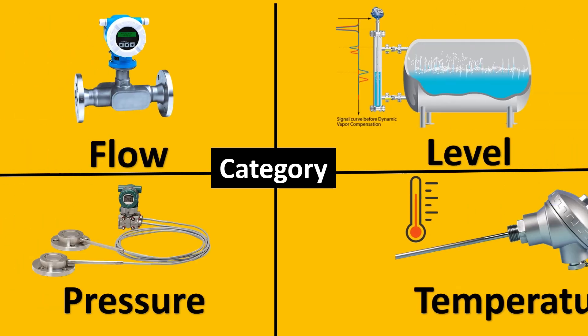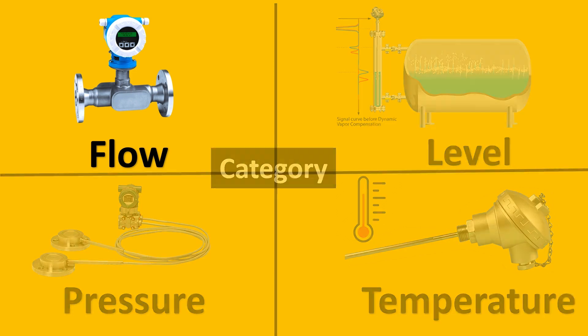The type can be divided into four major categories where the questions were asked, which was flow, level, pressure and temperature. So let us start with flow.